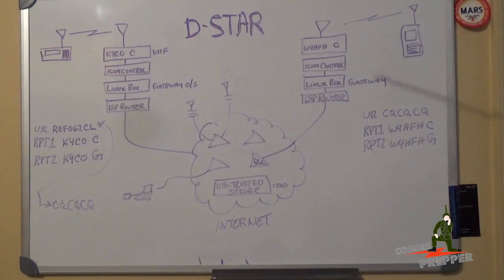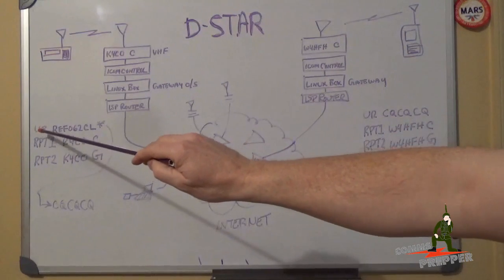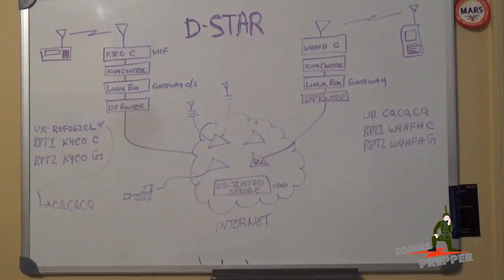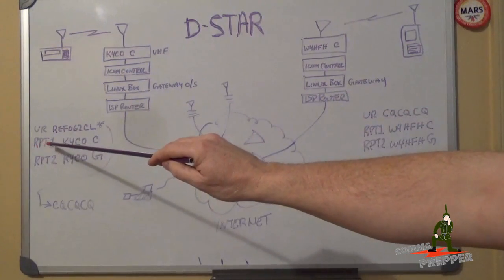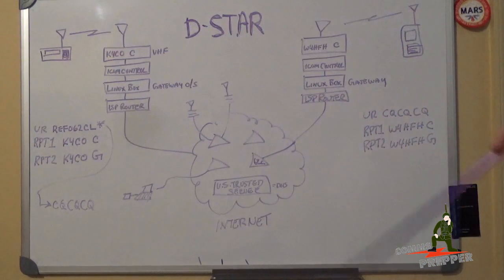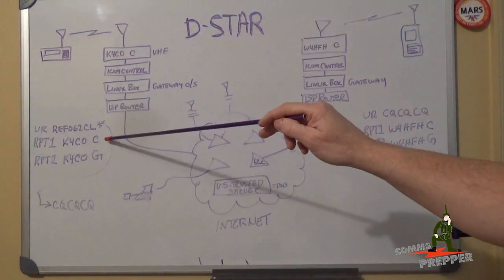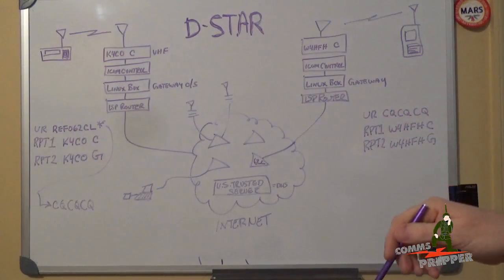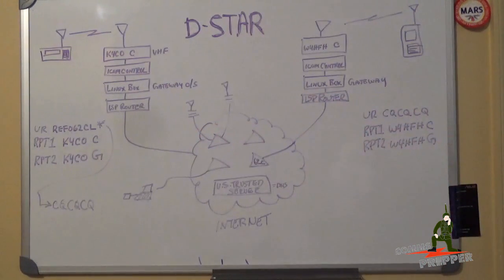So to set up this link, Brian in Kentucky had to configure the routing in his radio because this is digital. There's three key fields when he set this up. The UR field or UR call field and that's who you are calling. The RPT1 field and the RPT2 field. And I kind of consider the RPT1 field to be the on-ramp to a highway. How are you getting into the system? And then I look at the RPT2 field as the off-ramp. How are you going to get off of the system? Where are you going to come out of?